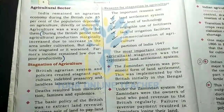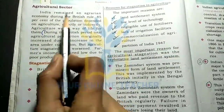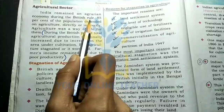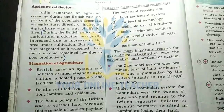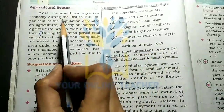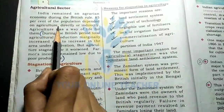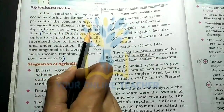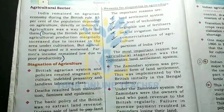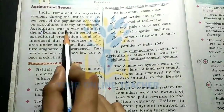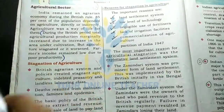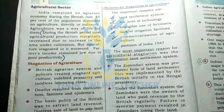Agriculture sector: India remained an agrarian economy during British rule. A large portion of the population directly or indirectly depended on agriculture. Agriculture was a way of life for them.